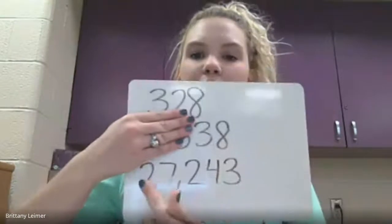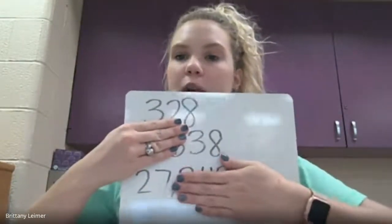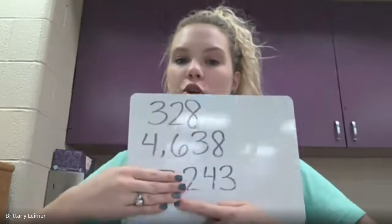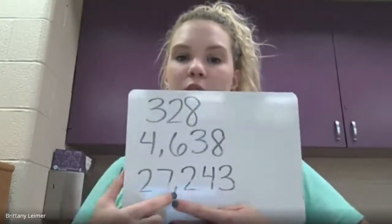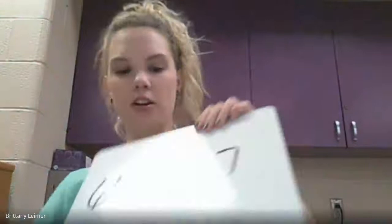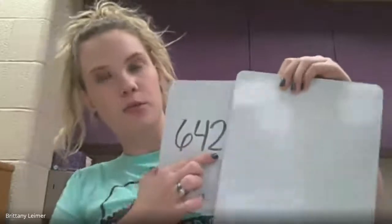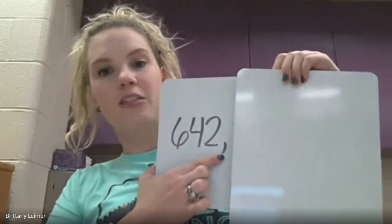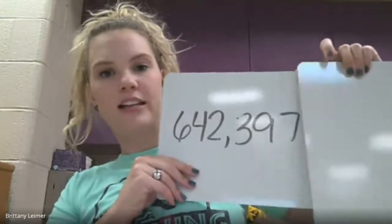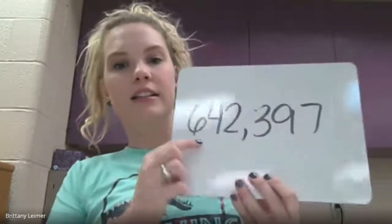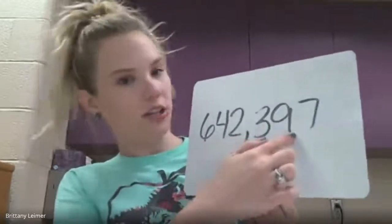Let's look at a few different numbers that we could read. Our first one: 27,243. Twenty-seven thousand, two hundred forty-three — 27,243. Let's practice another one: 642. What does that comma say? 642,397. Put it together: six hundred forty-two thousand, three hundred ninety-seven — 642,397.